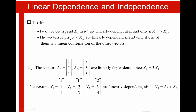Another note: two vectors X1 and X2 in Rn are linearly dependent if and only if X1 equals C·X2; in other words, one vector can be written in terms of the other. More generally, the vectors X1, X2 to XK are linearly dependent if and only if one of them is a linear combination of the other vectors.